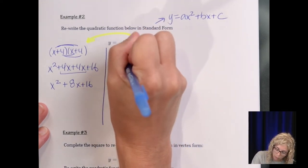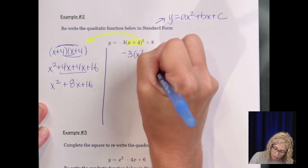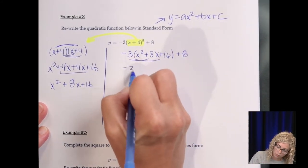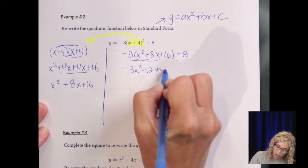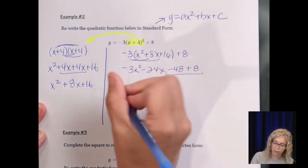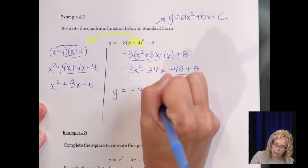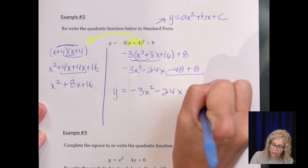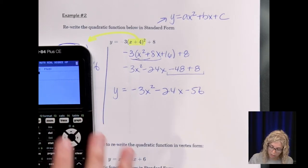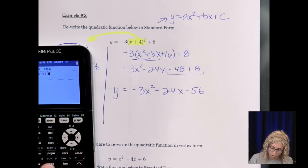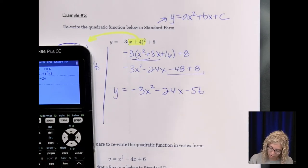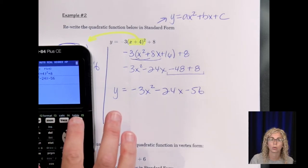So x squared plus 4x plus 4x plus 16. Combining the two middle terms gives us the perfect square trinomial. So x squared plus 8x plus 16. So now where that is, I'm going to replace that square with the trinomial. Now distributing that negative 3. So negative 3x squared minus 24x minus 48 plus 8. So our final answer, when we combine those terms without the variable, those are our only like terms, it's negative 3x squared minus 24x minus 56.